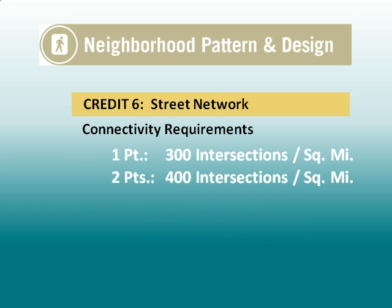Credit six within the Neighborhood Pattern and Design category is titled Street Network. To achieve one point in this credit, the project must have a minimum intersection density of 300 per square mile. For two points, 400 per square mile are required. Now, if you're like me, it's hard to grasp or visualize these densities.